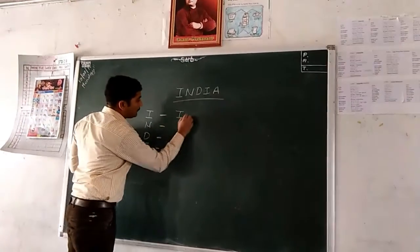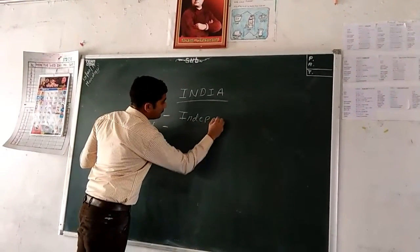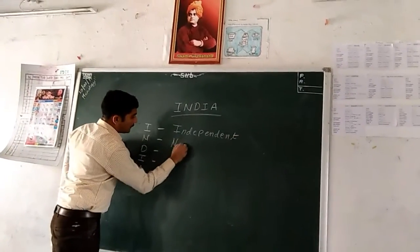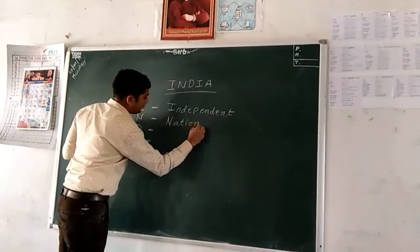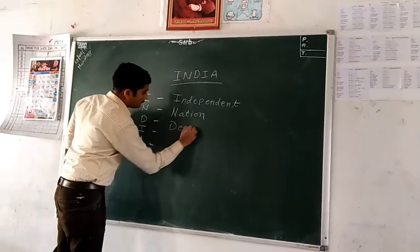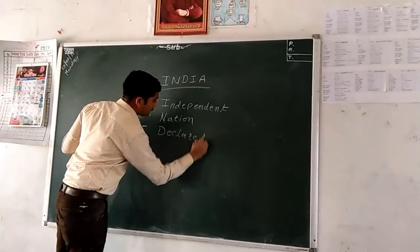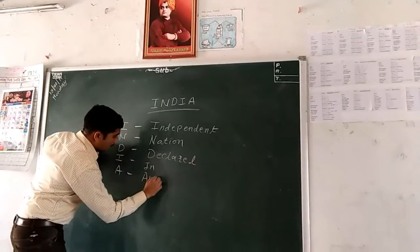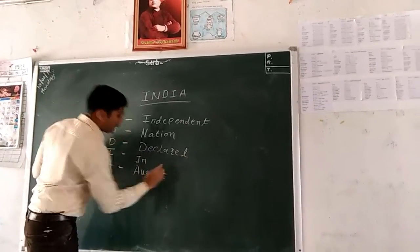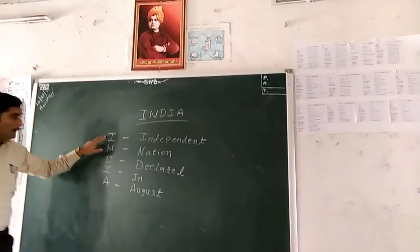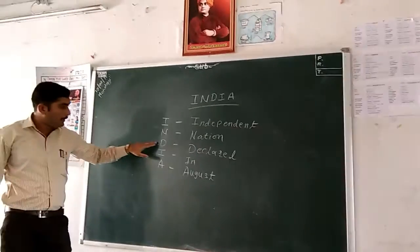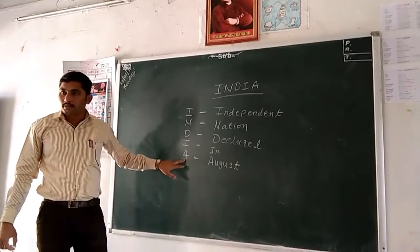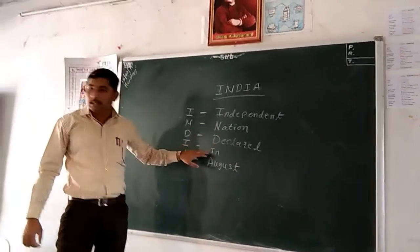I is for Independent. N is for Nation. D is for Declared. I is for In. And A is for August. So, I means Independent, N means Nation, D means Declared, I means In, and A means August — Independent Nation Declared In August.